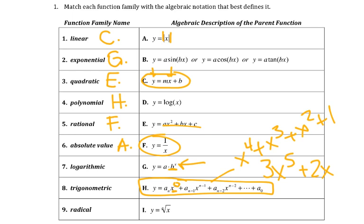Logarithmic — we haven't dealt with this one yet, but you can see we have one that says the word log. That's the ticket. Trig — we will learn about these later as well: sine, cosine, tangent. Those are trig, so you should be able to get that one. And then a radical, like the square root or the cube root — that would be i. So that's what you should have ended up with there.